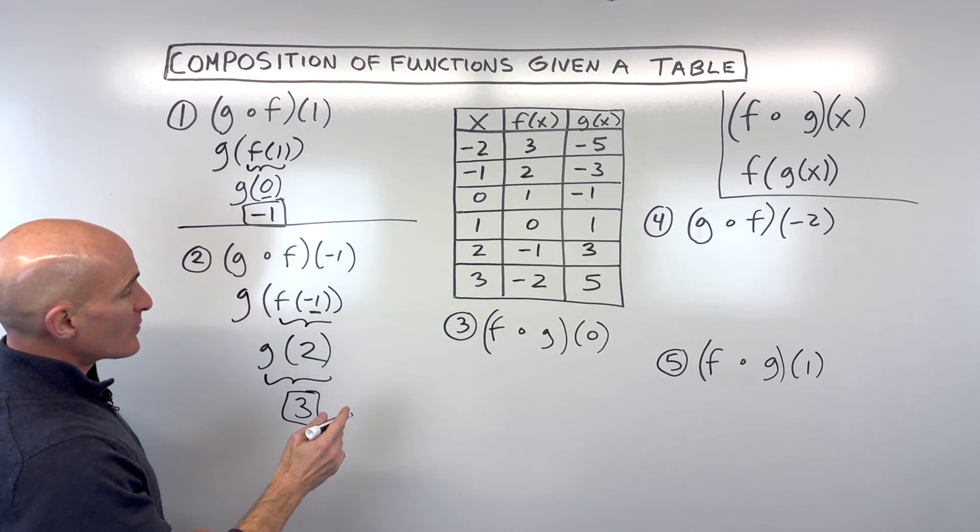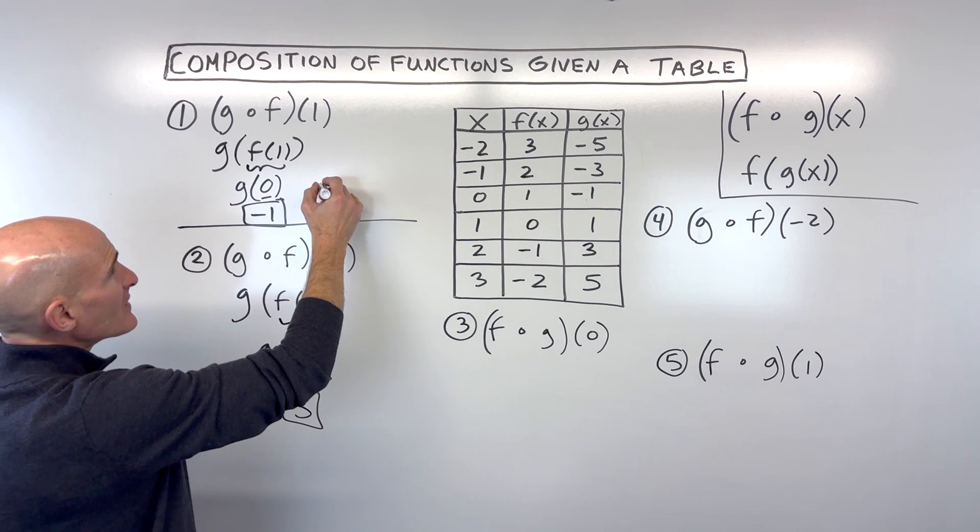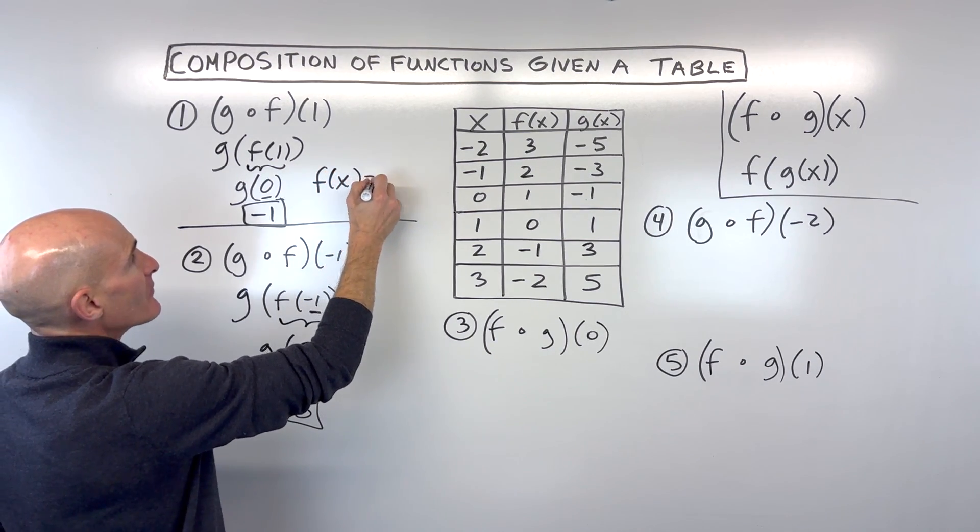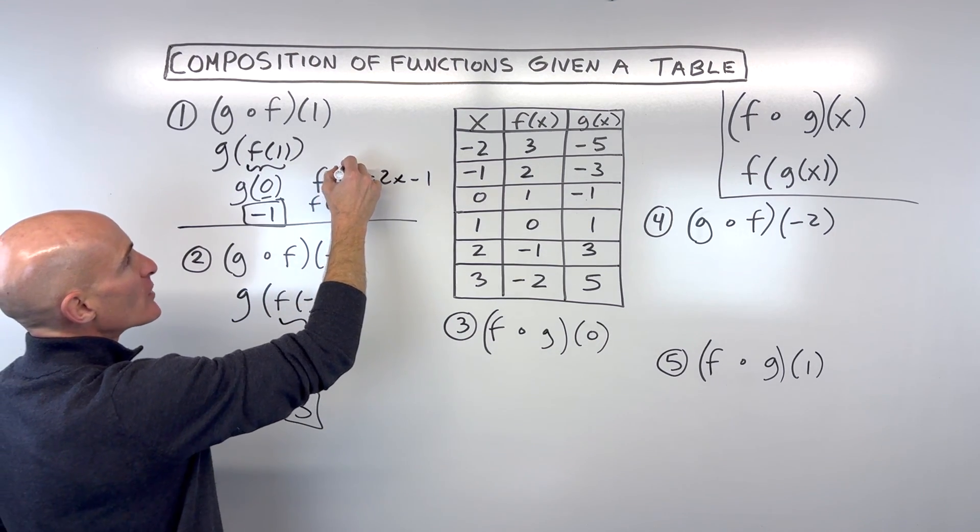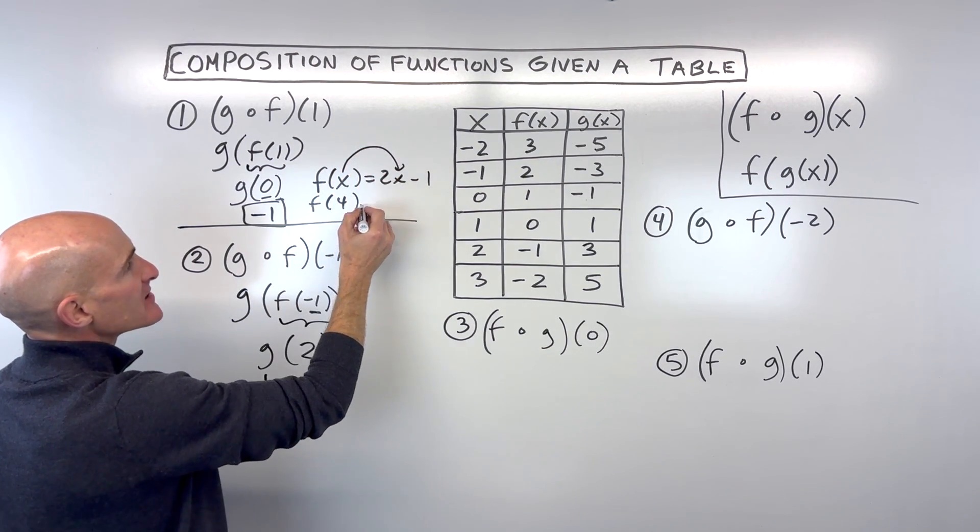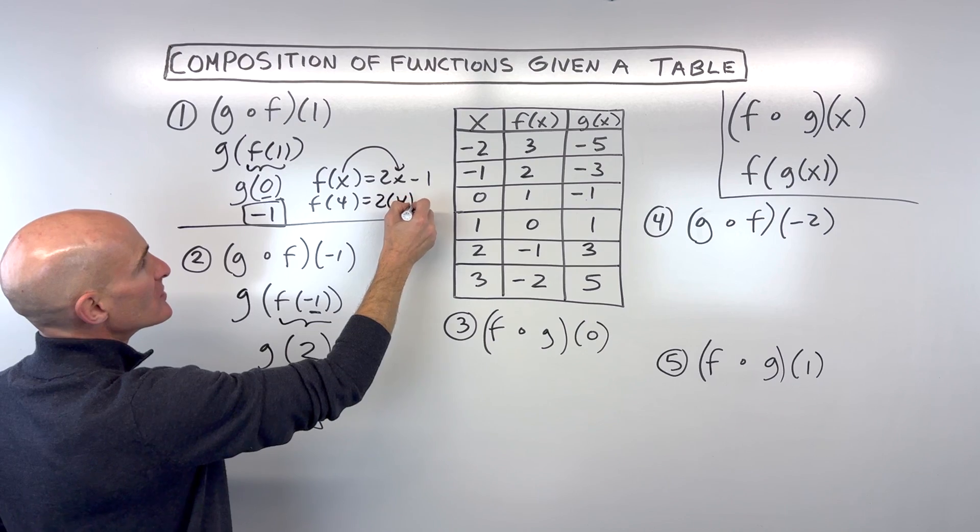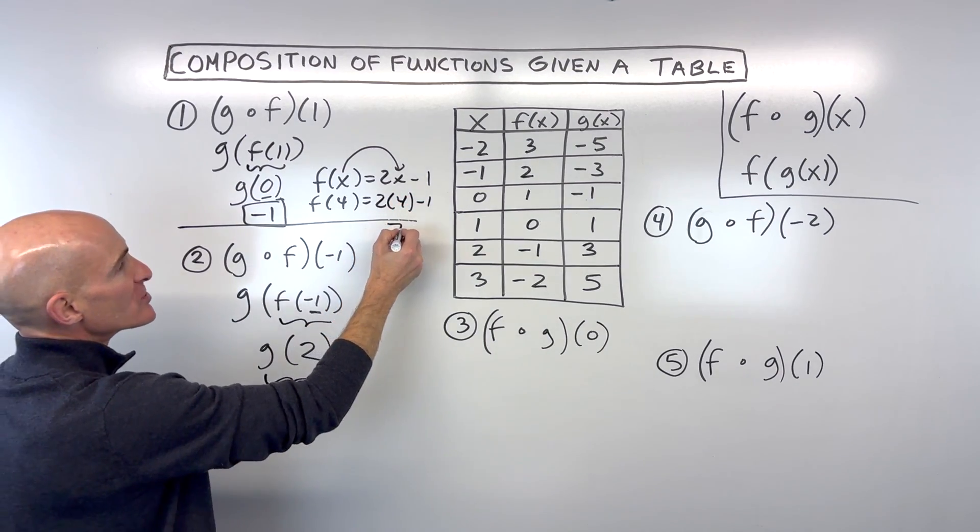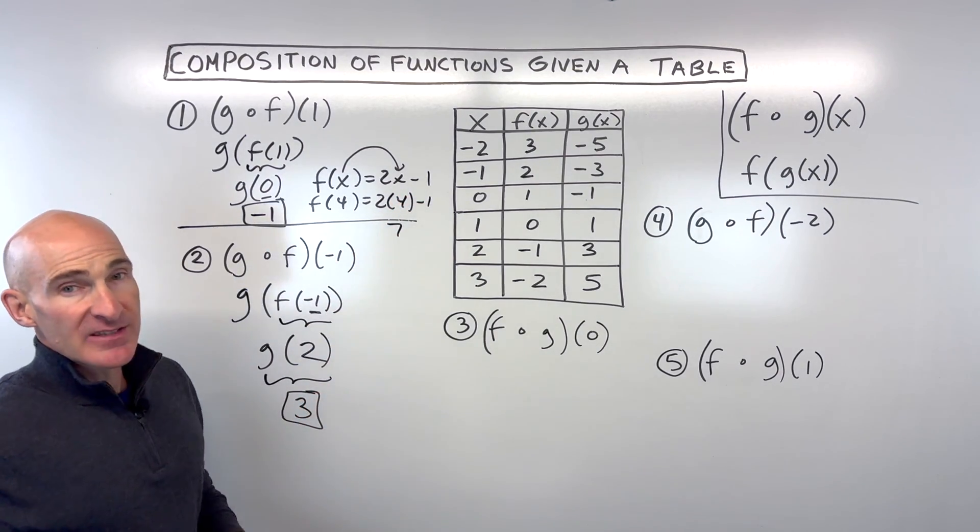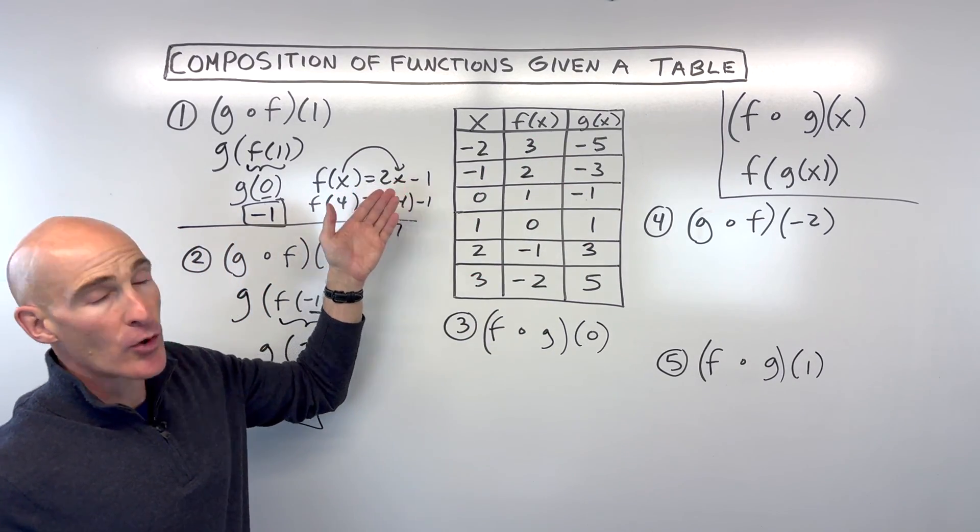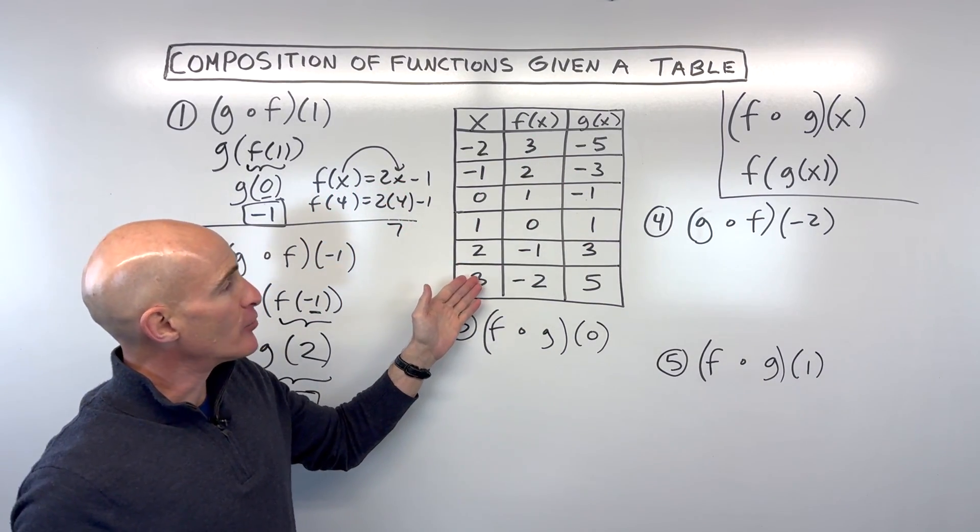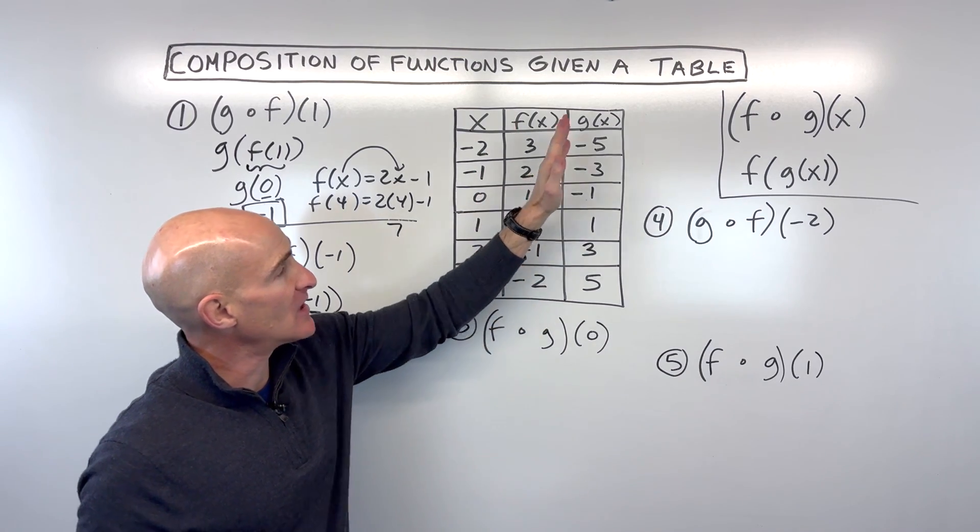Just a quick refresher before we do the next problem. If you have a function like f of x equals 2x minus 1, and I ask what's f of 4, whatever's in parentheses goes in for x on the right. So this would be 2 times 4 minus 1, which is 7. But in this case, they've done all that work for us in the table. They don't give us the actual equation, just the inputs and outputs for the f and g functions. Let's look at number three now.